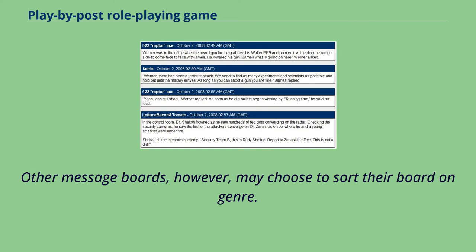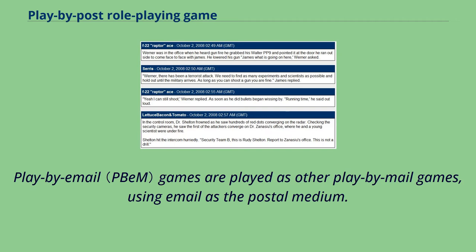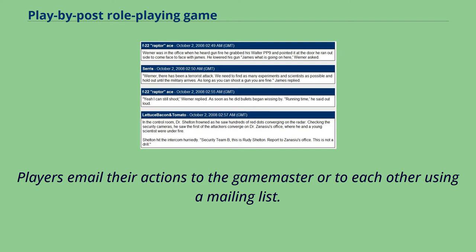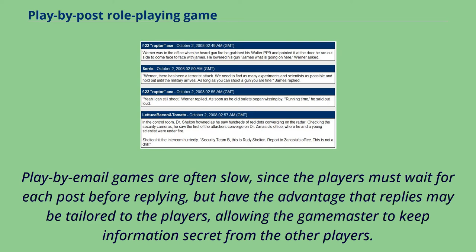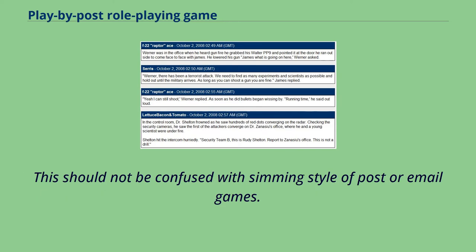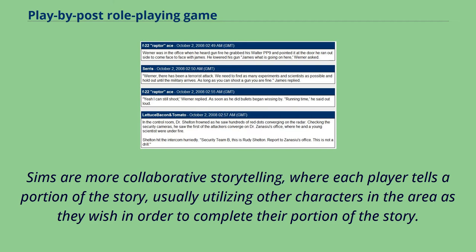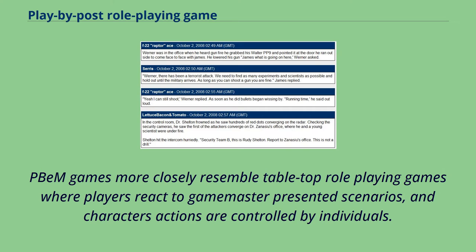Other message boards, however, may choose to sort their board by genre. Play-by-email games are played as other play-by-mail games, using email as the postal medium. Players email their actions to the game master or to each other using a mailing list. Play-by-email games are often slow, since the players must wait for each post before replying, but have the advantage that replies may be tailored to the players, allowing the game master to keep information secret from the other players. This should not be confused with the simming style of post or email games. Sims are more collaborative storytelling, where each player tells a portion of the story, usually utilizing other characters in the area as they wish in order to complete their portion of the story. Standard games more closely resemble tabletop role-playing games where players react to game master-presented scenarios, and characters' actions are controlled by individuals.